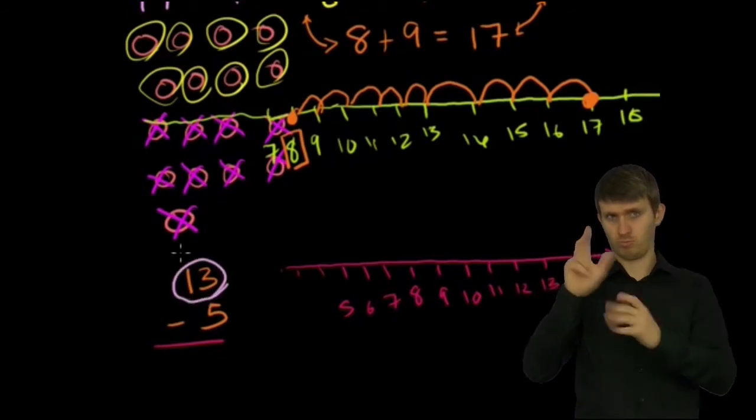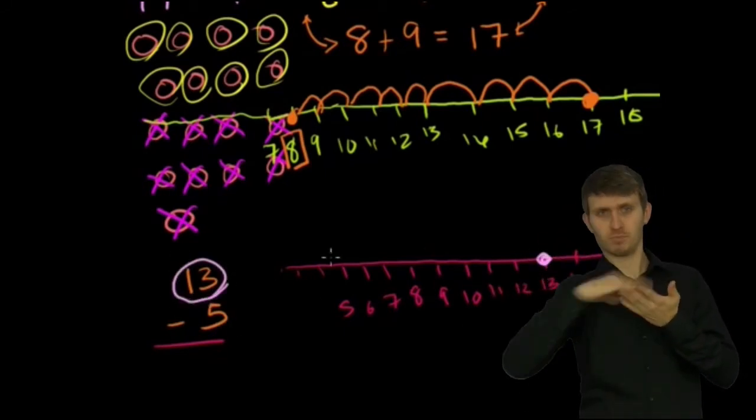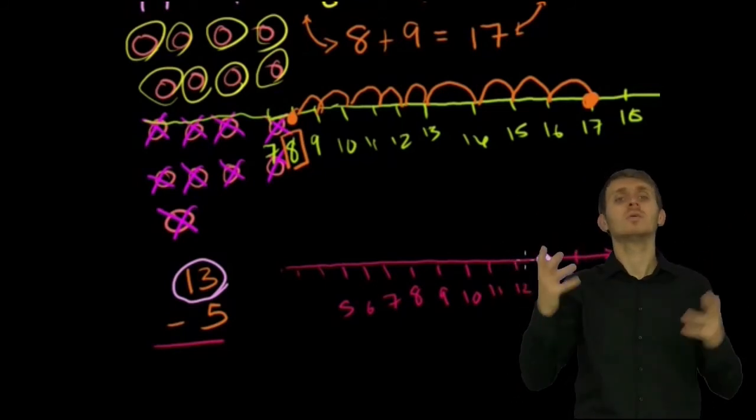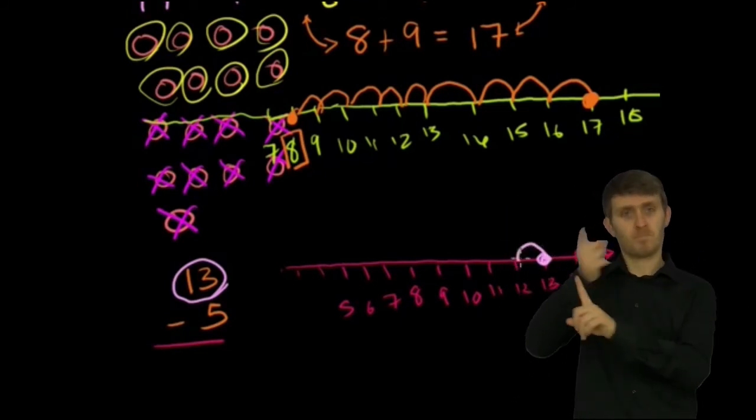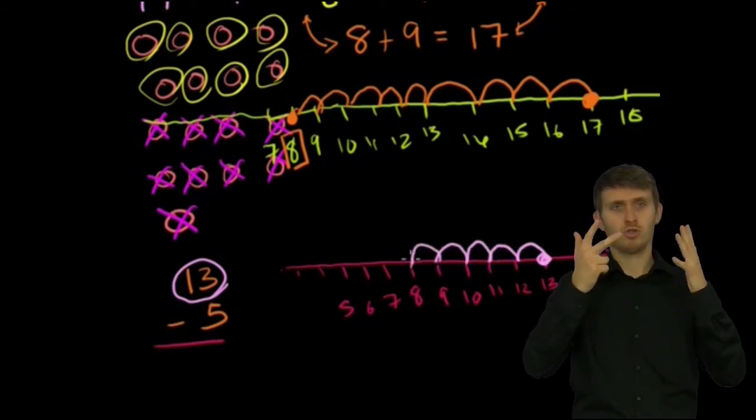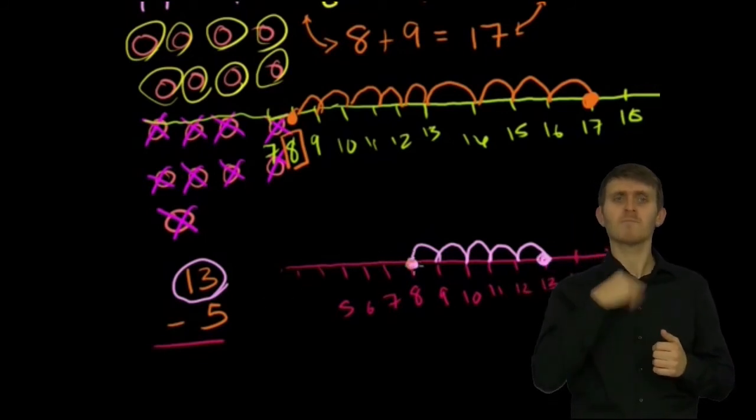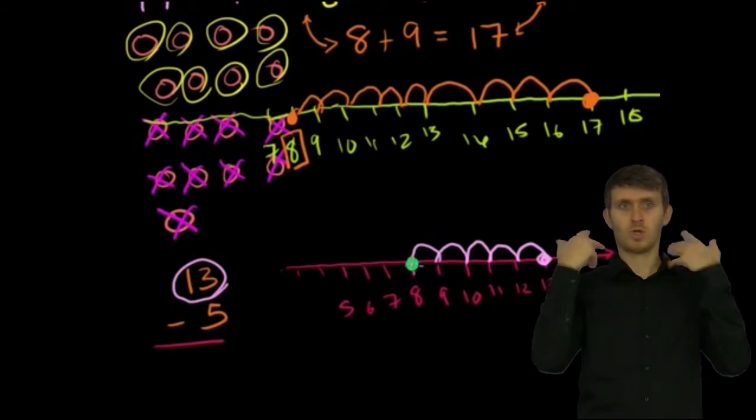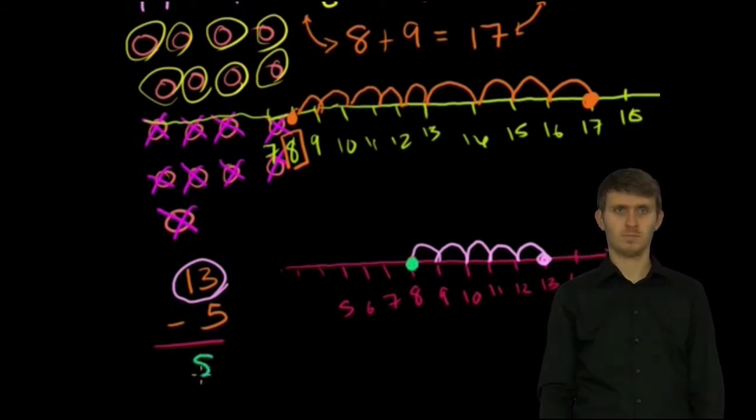We're starting at 13. And we're going to take 5 away from it. So this is the subtraction view of subtraction. We're taking away 1, 2, 3, 4, 5. And we land at 8. So 13 minus 5, let me do this in a new color, 13 minus 5 is equal to 8.